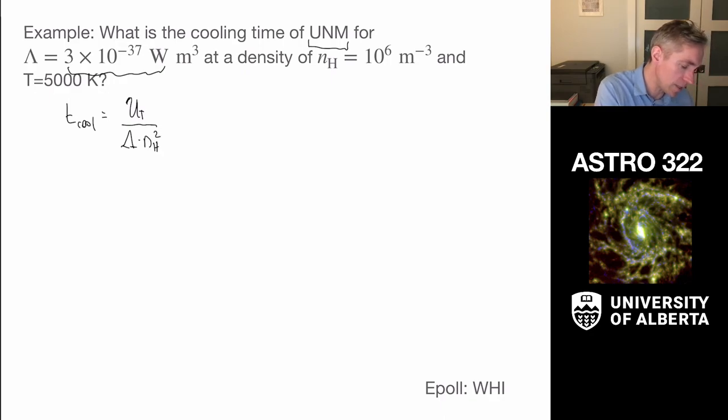and that cooling rate is the lambda times the NH squared. So this is basically the thermal energy per unit volume, and then we're going to divide it by the power of radiation per unit volume.